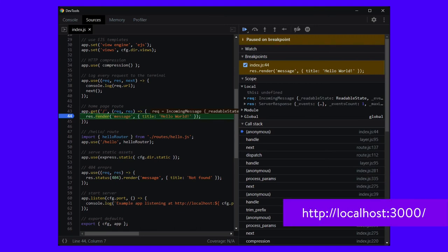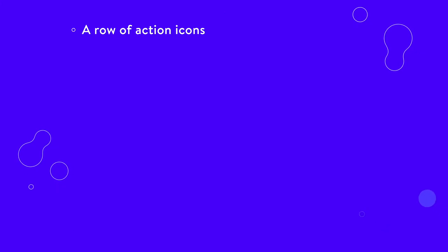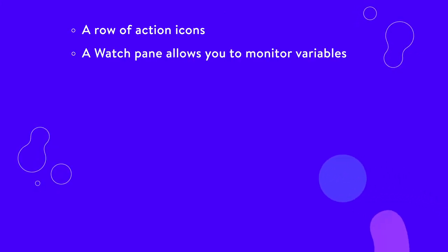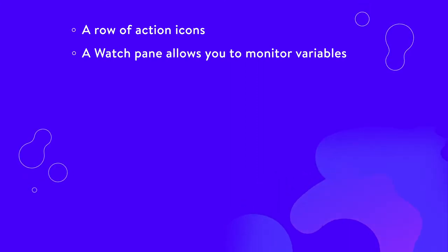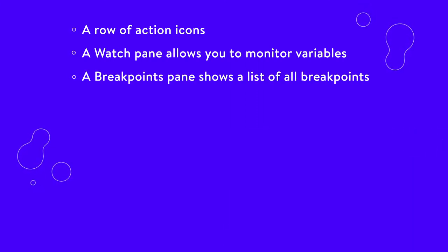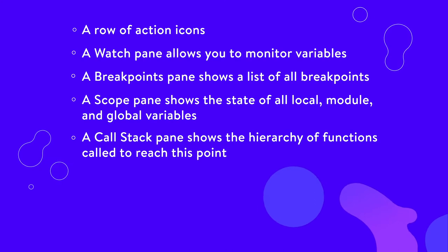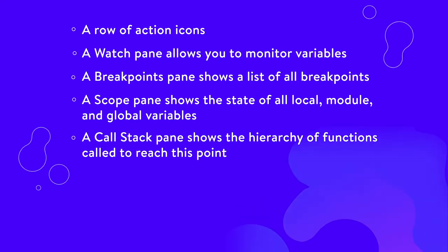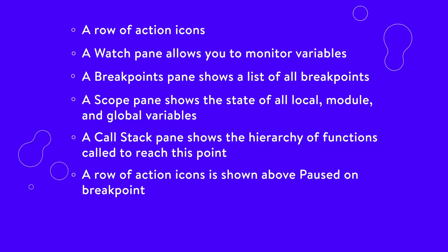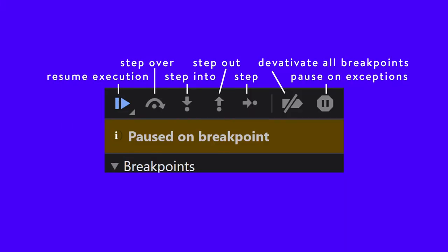In the example here, localhost:3000 is opened in any browser and DevTools will halt execution on line 44. The right-hand panel shows a row of action icons. A Watch pane allows you to monitor variables by clicking the plus icon and entering their names. A Breakpoints pane shows a list of all breakpoints and allows them to be enabled or disabled. A Scope pane shows you the state of all local, module, and global variables — you will inspect this pane most often. A Call Stack pane shows the hierarchy of functions called to reach this point. A row of action icons is shown above 'Paused on breakpoint'.